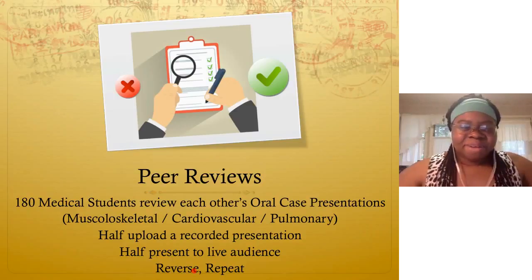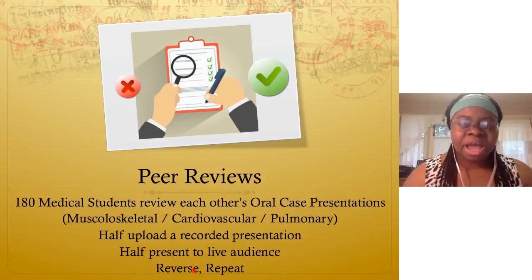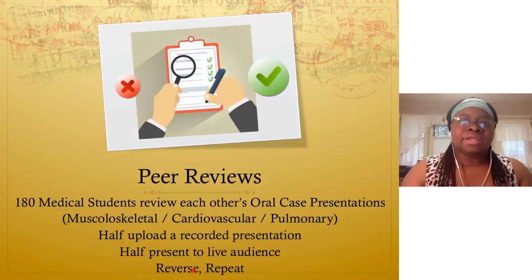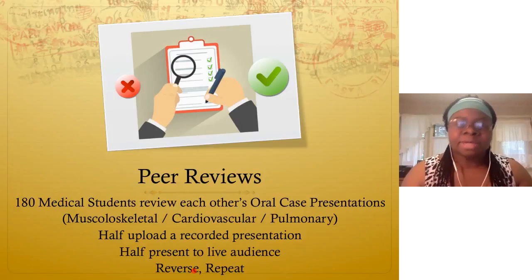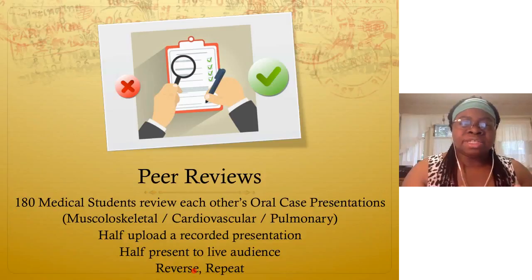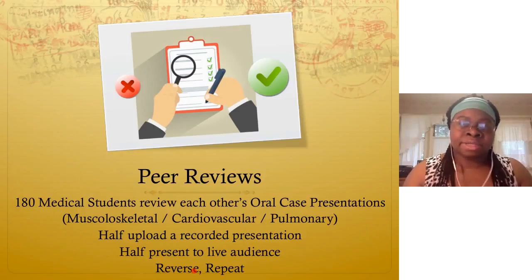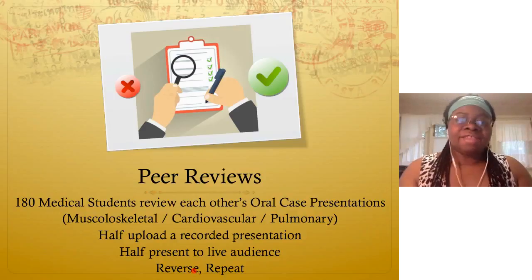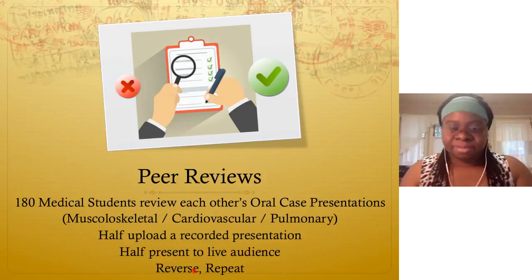So, peer reviews for this particular activity. I had 180 medical students that were going to be grouped into groups of six — about 30 groups or more, sometimes with five people instead of six. They were going to do this in three phases: three peer review activities throughout the semester. The first covered musculoskeletal topics, then cardiovascular, and then pulmonary.